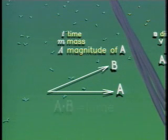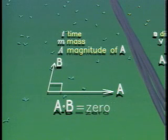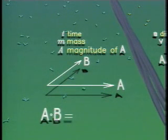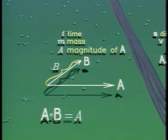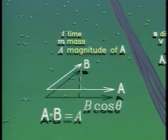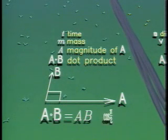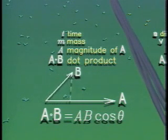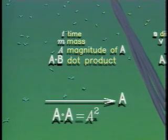A vector can be multiplied by another vector. The dot product of a and b is a scalar that measures the tendency of the two vectors to point in the same direction. A dot b is equal to the length of a times the length of b times the cosine of the angle between them. If a and b are perpendicular, their dot product is zero. And the dot product of a vector with itself is just the square of its length.